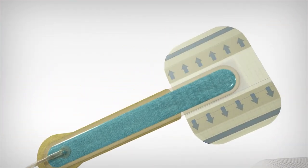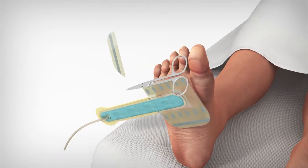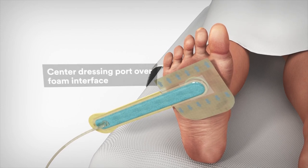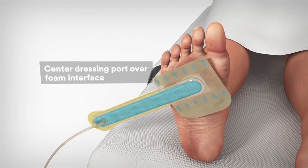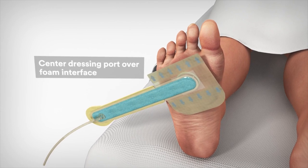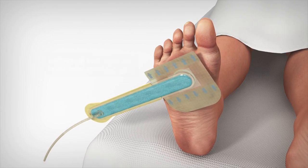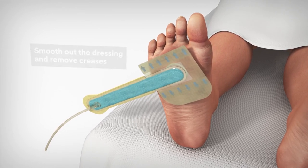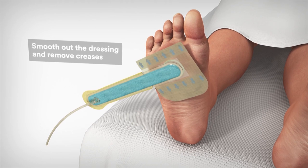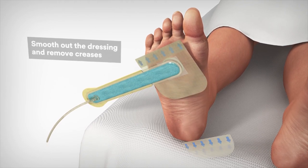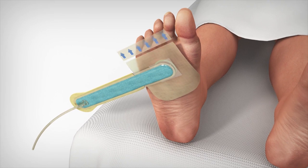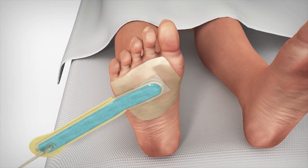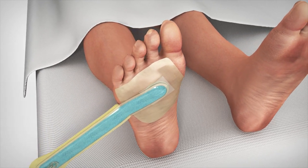To begin application of the SNAP bridge dressing, slowly peel away the release liner as you carefully place the SNAP bridge dressing over the wound. Ensure the center opening of the port is placed directly over the foam interface and carefully apply the dressing over the wound. The dressing should be adhered to at least 1 cm of intact skin to maintain a proper seal. Smooth out the hydrocolloid dressing onto the skin and remove any small creases. Use your hands to smooth out the dressing to ensure an airtight seal to the skin.